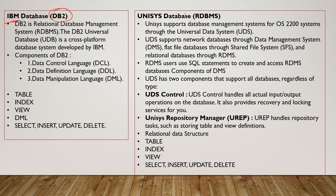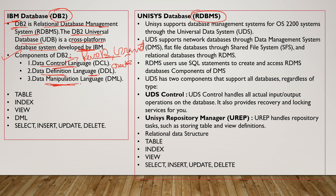Next, we differentiate based on database processing. In IBM we use the DB2 database, while in Unisys we use RDMS. DB2 is a relational database management system — the DB2 Universal Database (UDB) is a cross-platform system developed by IBM. It has three components: Data Control Language (DCL) for granting or revoking access, Data Definition Language (DDL) for creating tables, and Data Manipulation Language (DML) for inserting, updating, and deleting data.